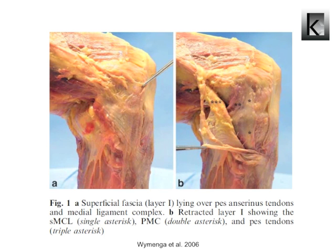In cadaver knee studies, the superficial MCL provided 57% of the restraining knee valgus moment at 5 degrees of knee flexion, and provided 78% of the restraining moment at 25 degrees of knee flexion, due to decreased contribution from the posterior medial capsule, or PMC. Therefore, when examining purely the MCL, a valgus stress test in 25 to 30 degrees of flexion is advised.